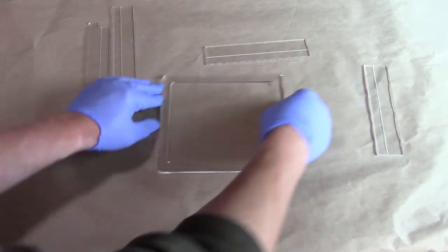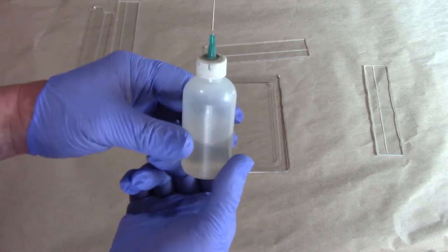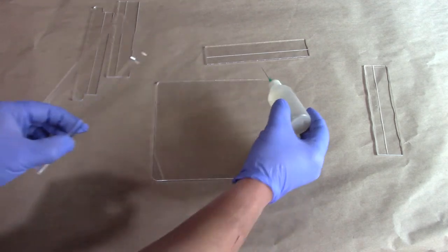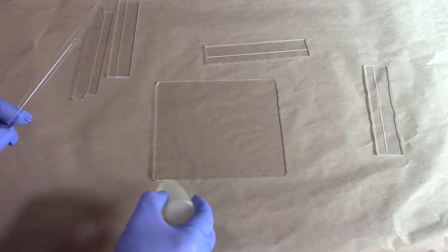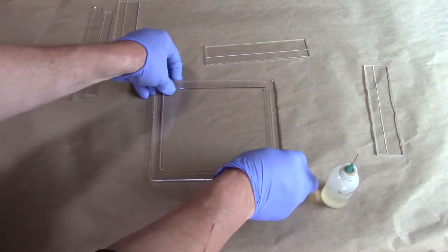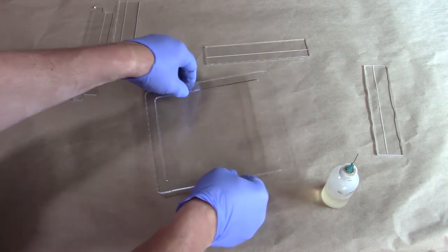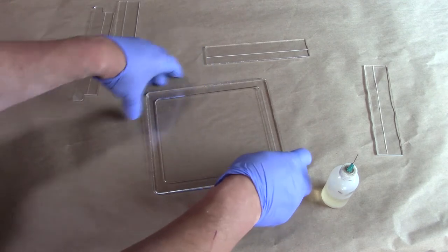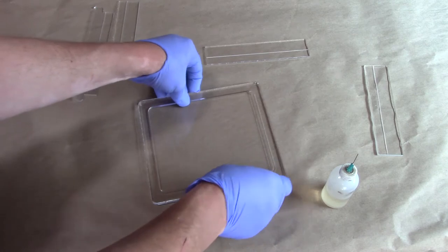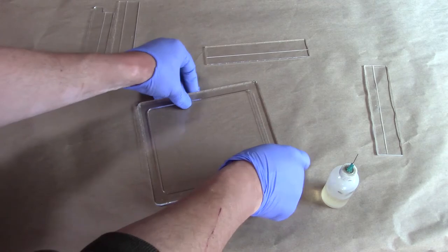First thing we're going to do is put the base together. Again, I showed you the adhesive I'm using. It's water thin, needle applicator here. I'm going to put a little bit of a bead on the edge. I'm going to set this guy, line him up. You've got a little bit of work time with this, so you don't have to rush. But make sure that you get those edges nice and flush. That's about flush like that.